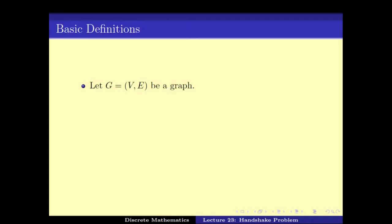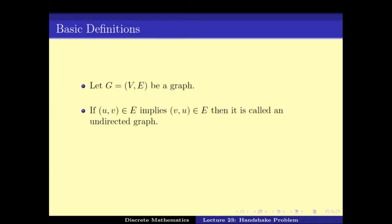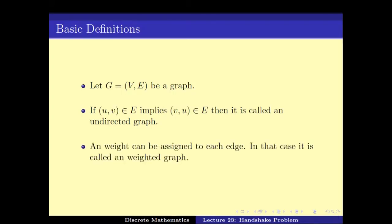There are some basic definitions. If G is a graph and if there is an edge between U and V, then it implies there is an edge between V and U — meaning the relation is symmetric. In that case we call that graph an undirected graph. Sometimes for modeling purposes we assign some weights to the edges, and in that case we call them a weighted graph.